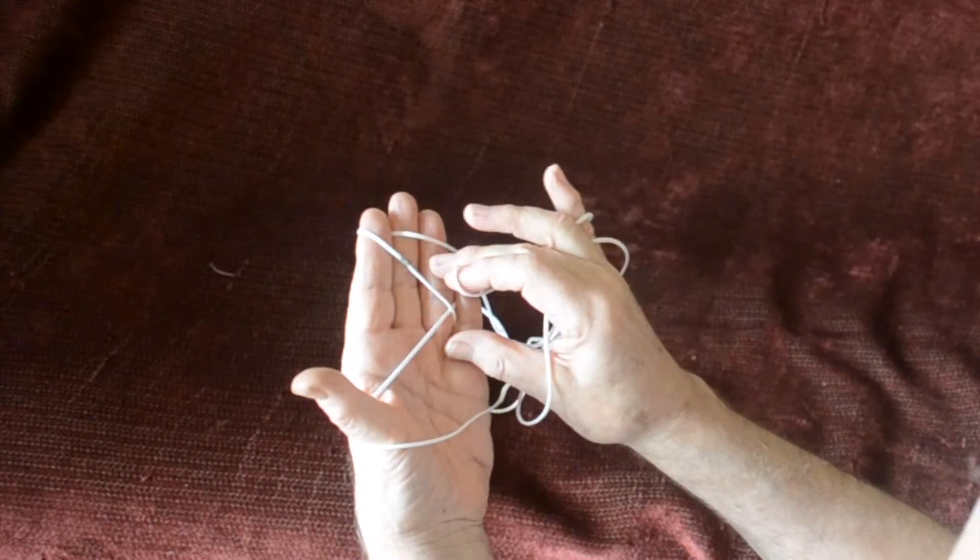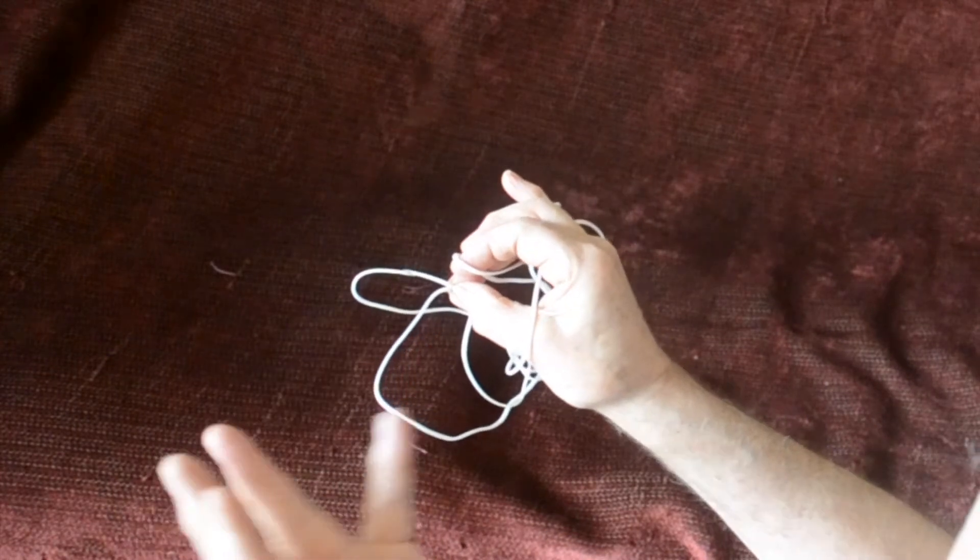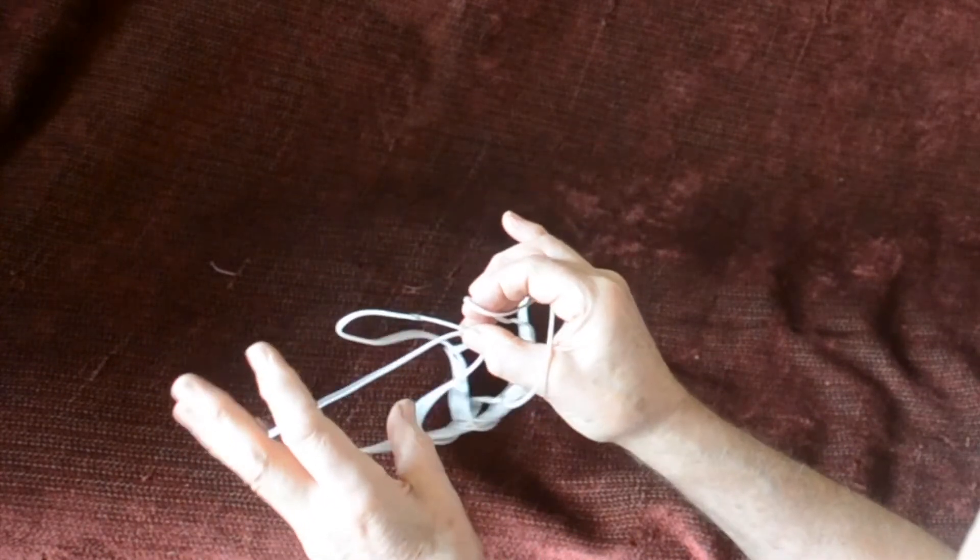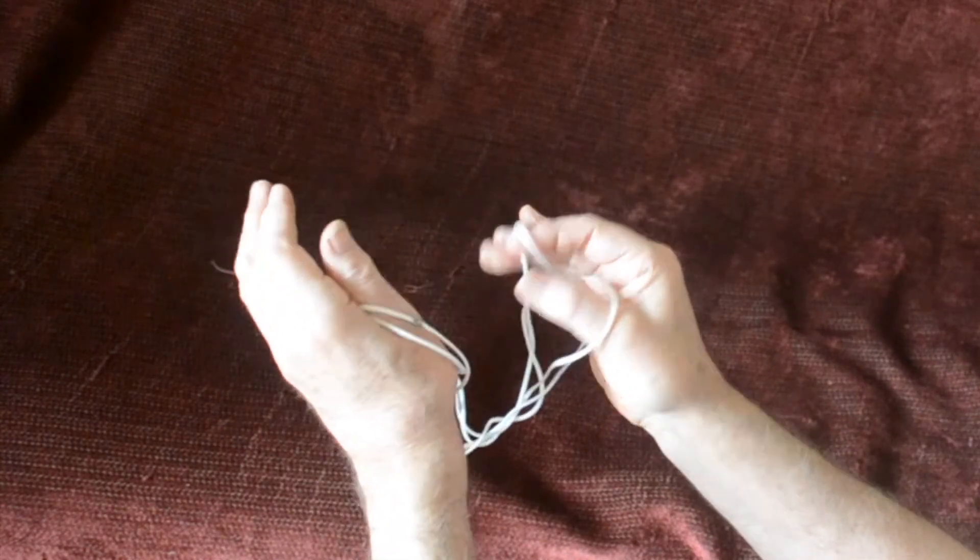Now to turn it into a Caroline extension, all you do is grab where the two strings cross the thumb and the index loop. Then put the little finger away from you into the thumb loop and the thumb into both the loops that you're holding in the hand.